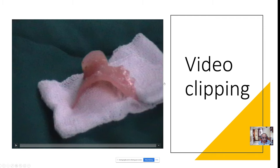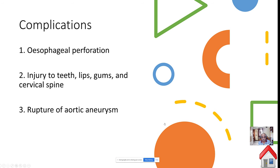Now let me give out the various complications of esophagoscopy. While attempting the scopy, you can inadvertently perforate the esophagus, cause injury to the lips, teeth, or gums, traumatize the cervical spine or cause a cervical spine fracture leading to cord compression. If the patient is having an aortic aneurysm, you can cause rupture of the aortic aneurysm leading to instantaneous death on the table.